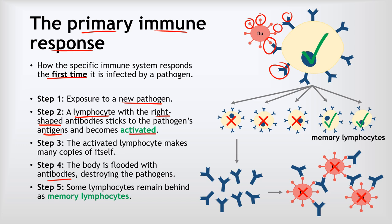After the pathogen has been destroyed, most of those lymphocytes will die. But some of those lymphocytes will remain behind in the body to become what we call memory lymphocytes, and that will help us the next time we're infected with the same pathogen.